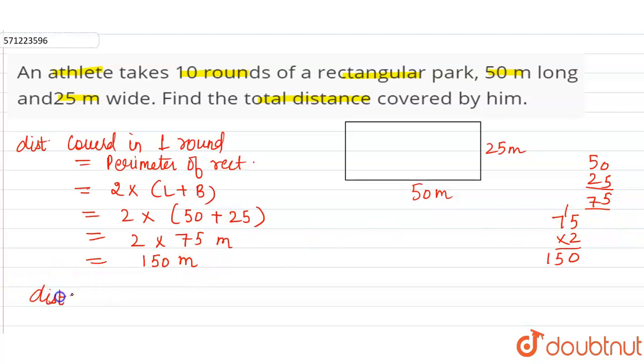Now we have to find distance covered by him in 10 rounds. So for finding the distance covered in 10 rounds, we have to multiply the total distance covered in one round with 10 rounds.